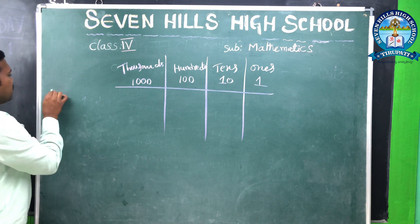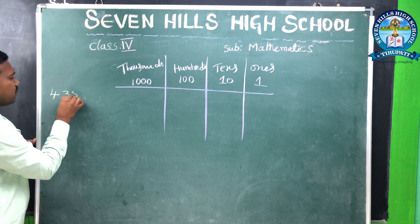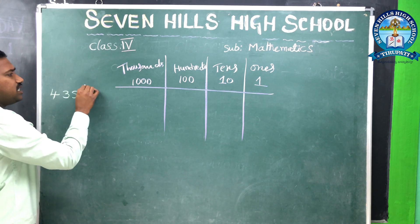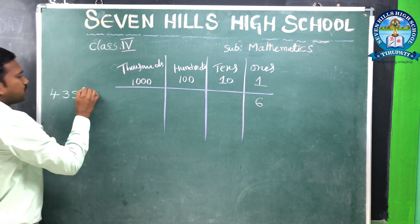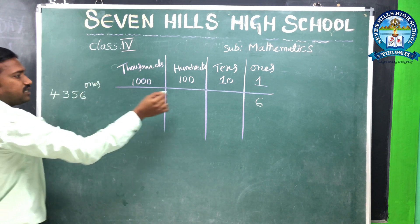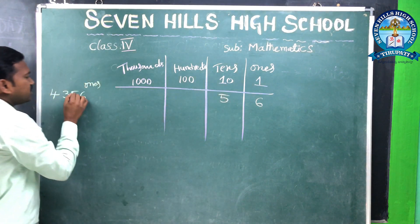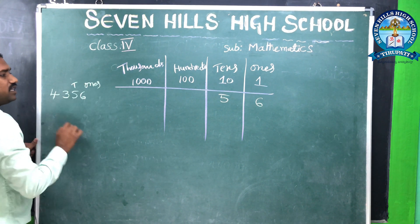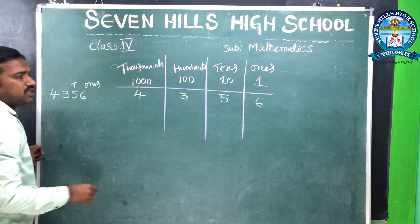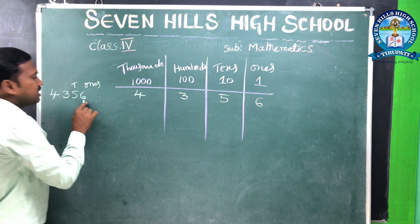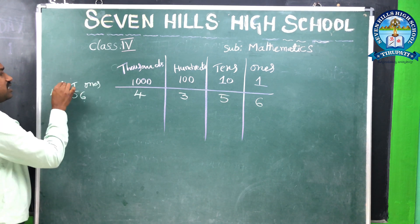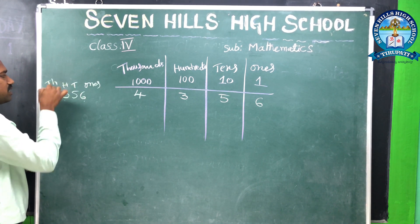Suppose I have the number 4356. Here, 6 is in the ones place, 5 is in the tens place, 3 is in the hundreds place, and 4 is in the thousands place.